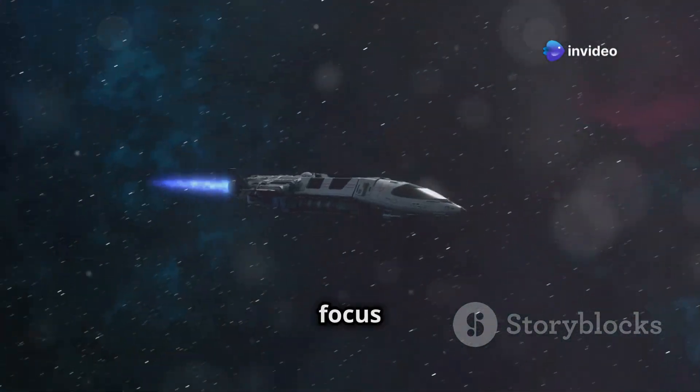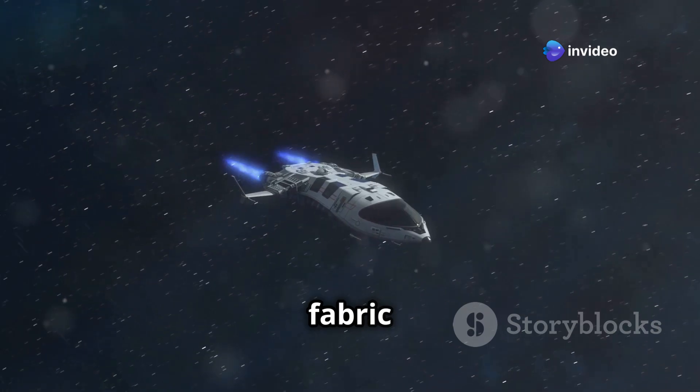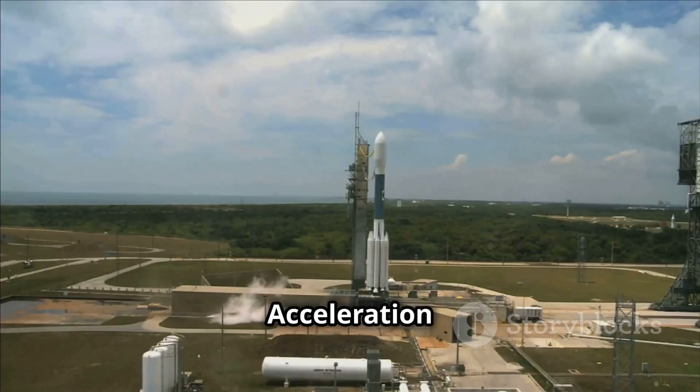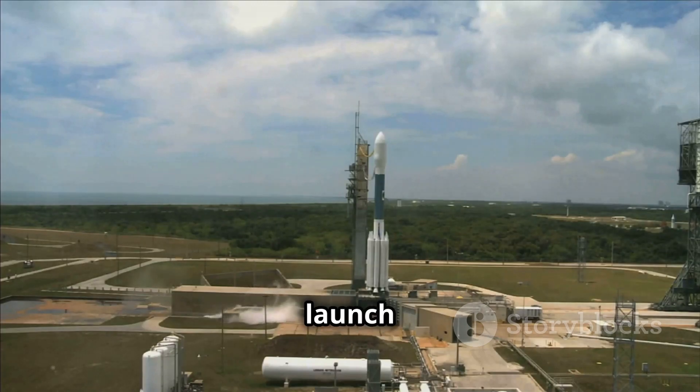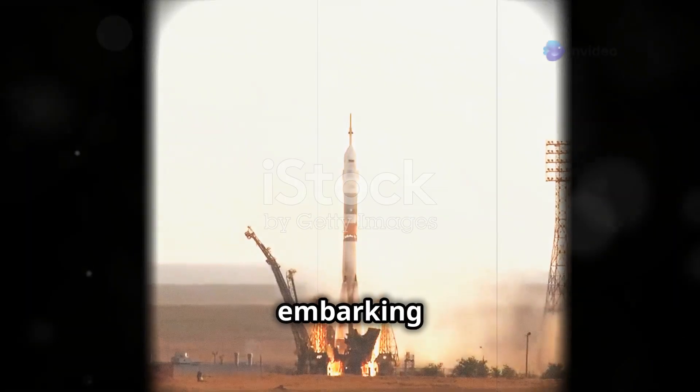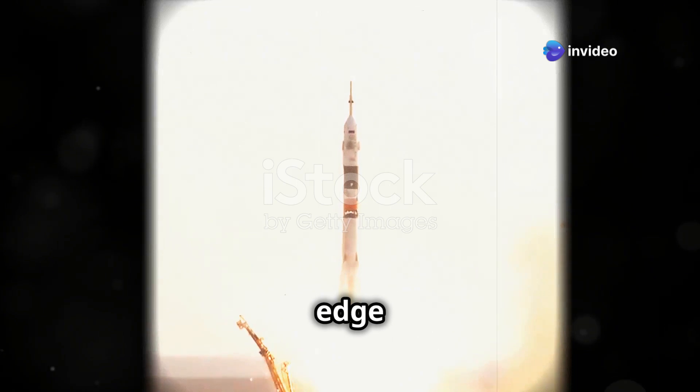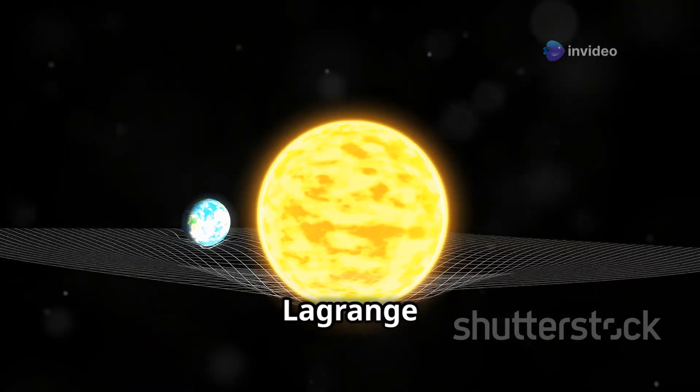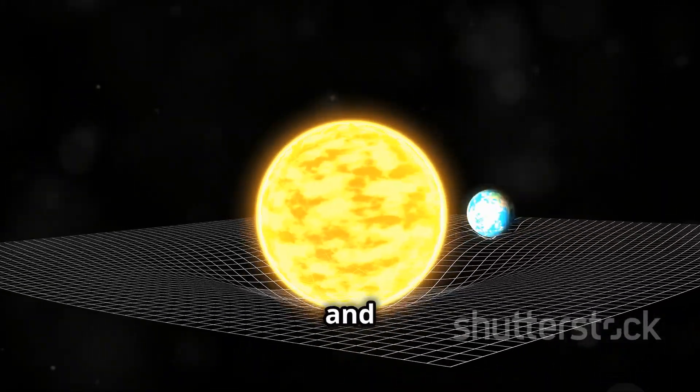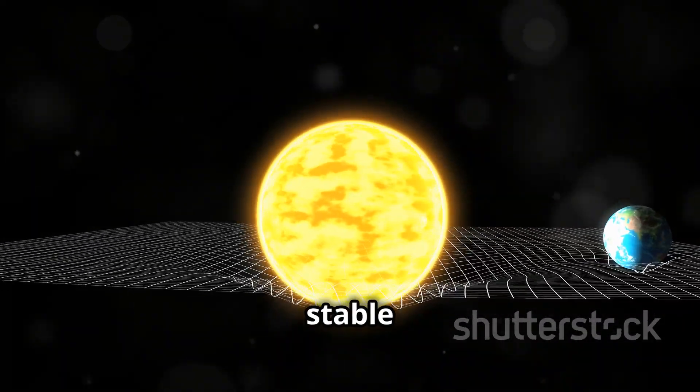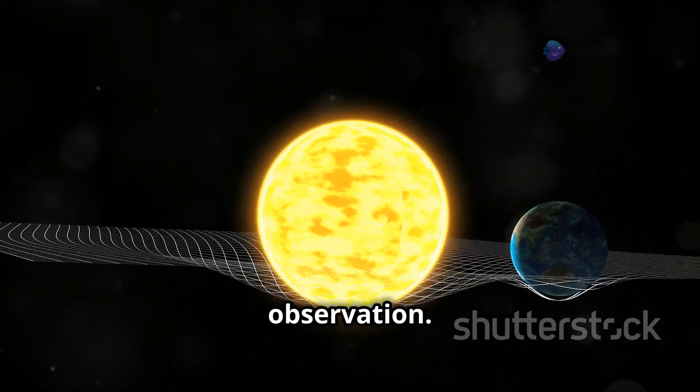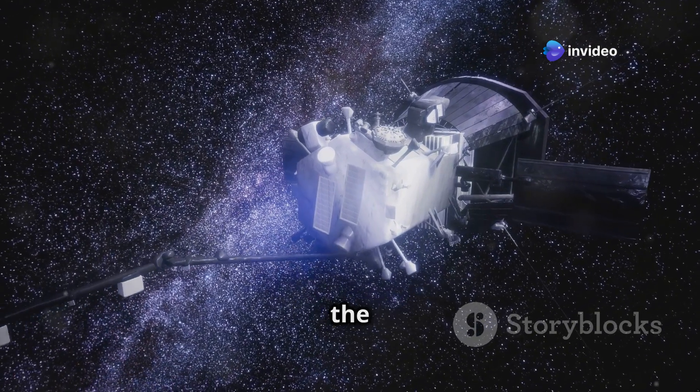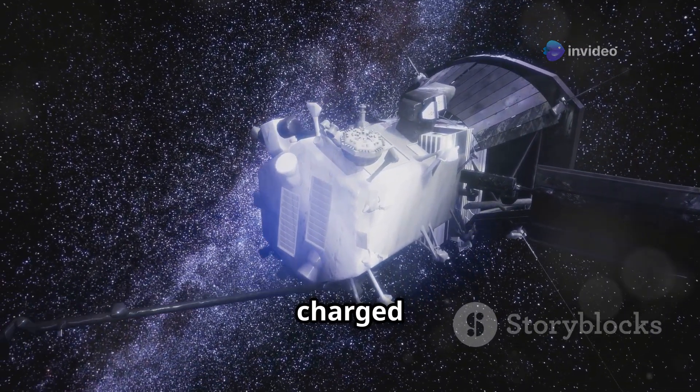Now let's shift our focus from the search for life to understanding the very fabric of space itself. NASA's Interstellar Mapping and Acceleration Probe, or IMAP, is set to launch in 2025, embarking on a mission to study the very edge of our solar system. IMAP will be stationed at a special point in space called the Lagrange point, where the gravitational forces of the sun and Earth balance out, providing a stable vantage point for observation.